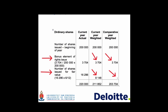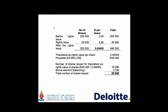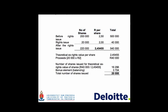We make use of a table with the following columns: the first column is the number of shares, the second column is the rand value per share, and the third column is the total rand value. The number of shares immediately prior to the rights issue were 200,000, at which point they were trading at a fair value of R2.50 per share.